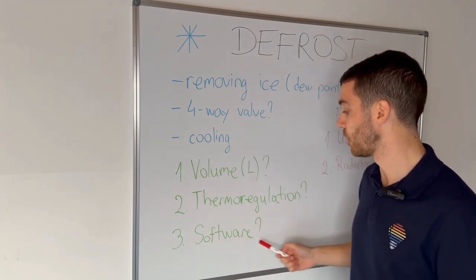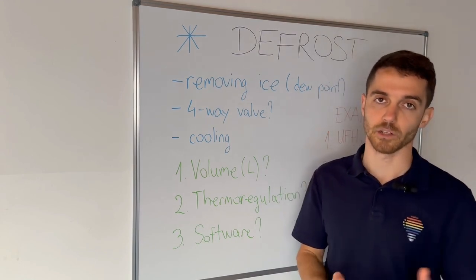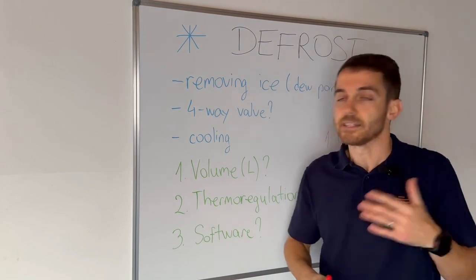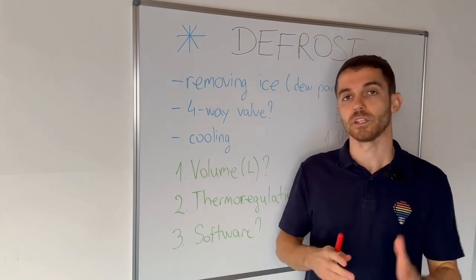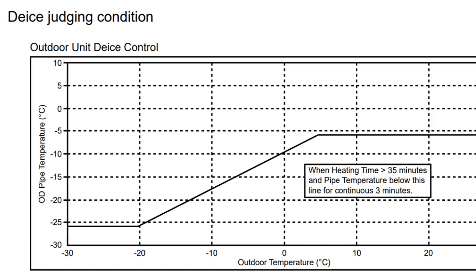The last point is software. Depending on the manufacturer and the algorithm, the software decides when to perform the defrost cycle. For example, if the outdoor sensor drops below a certain point, it starts the defrost cycle, and at that point the cycle must last for some amount of time.